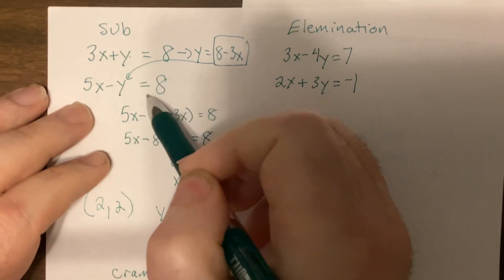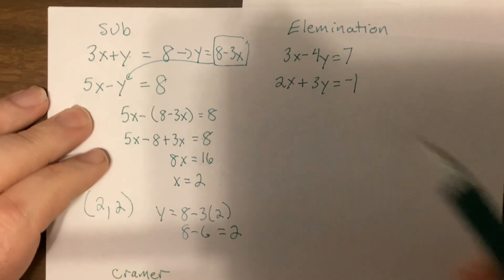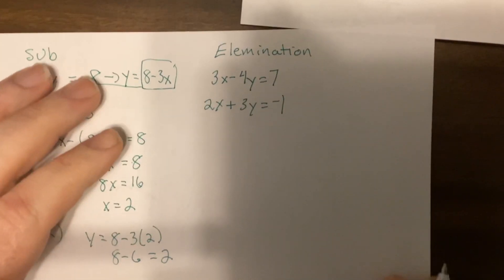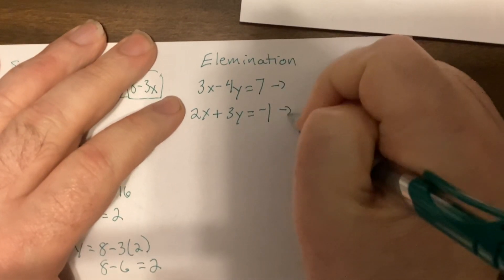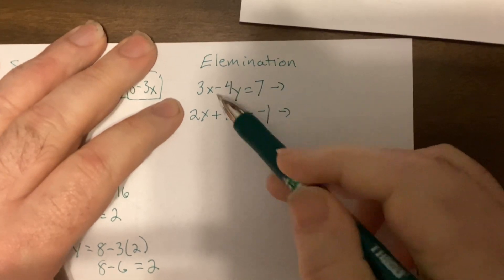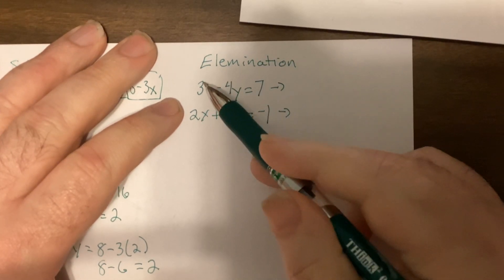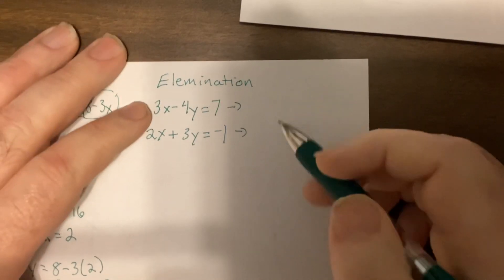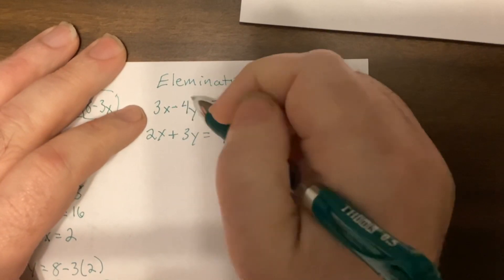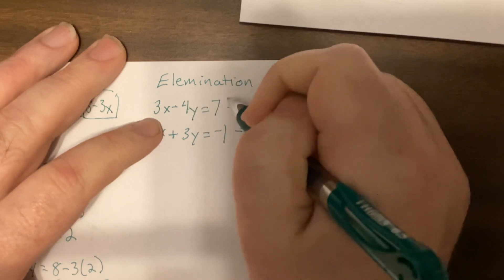This one, elimination. I'm going to set up opposite coefficients for one set of variables. Doesn't matter if it's the x or if it's the y. I'm going to do y because it's already positive and negative. So I'm going to multiply this one by 3 and this one by 4.